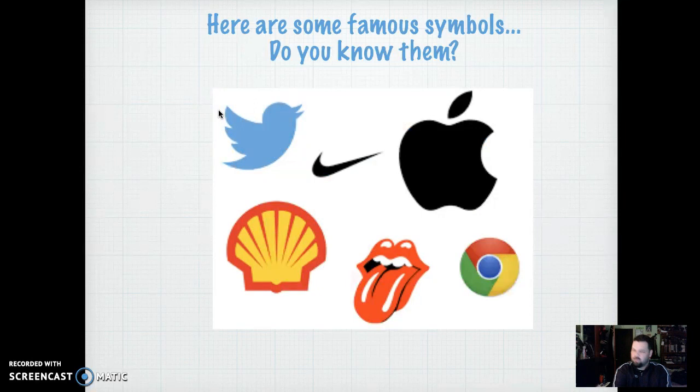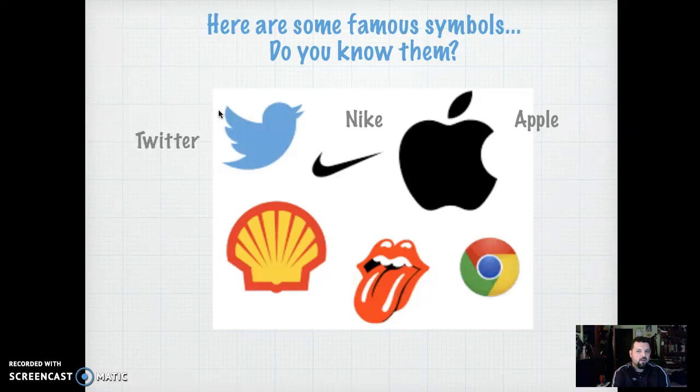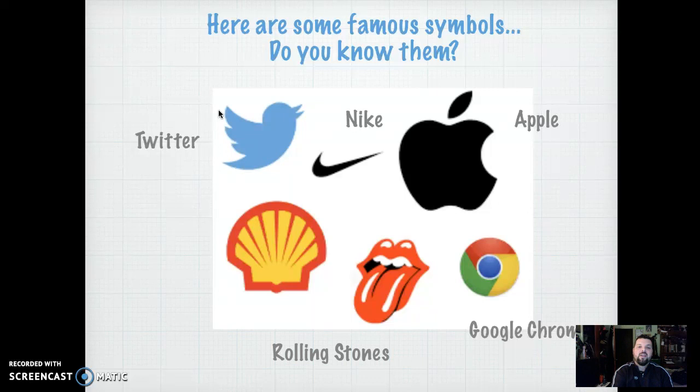What do we have first? We got the Twitter — as my mom likes to call it. How about Nike? What about this next one here? That's an Apple. Google Chrome? I bet you don't know those last two. Well, they're a little older. That's a rock band group called the Rolling Stones — you might want to ask your parents about that one. And then that's Shell Gasoline. If you saw these anywhere in life, you would know what they are. Companies are smart to design their brand around an image.